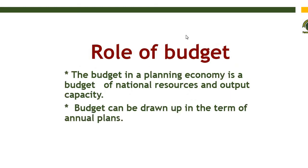Role of budgeting: The budget is a planning tool — the economy is a budget of national resources and output capacity. So the budget plays the role of planning the economy as well as national resources and their outputs. A budget can be drawn up in terms of annual plans, because generally budgeting is done for a fiscal year — a period of one year. We can draw annual plans in the light of budgeting.